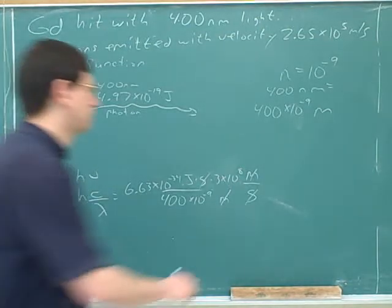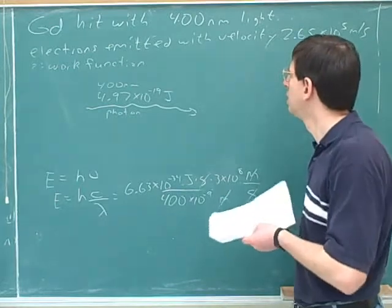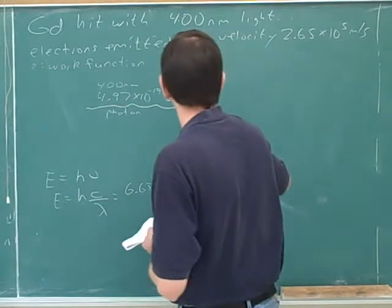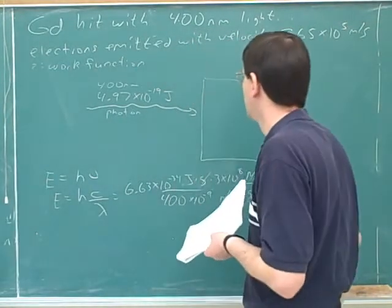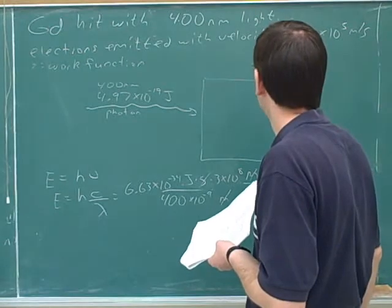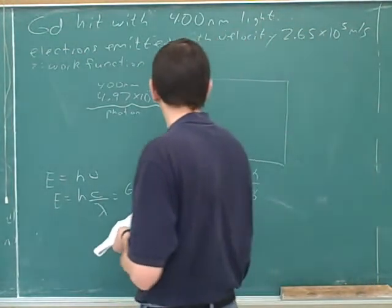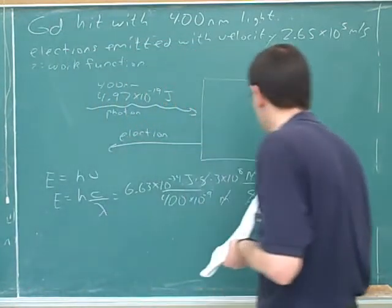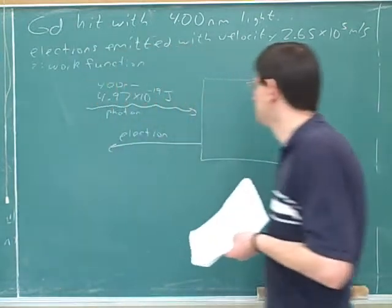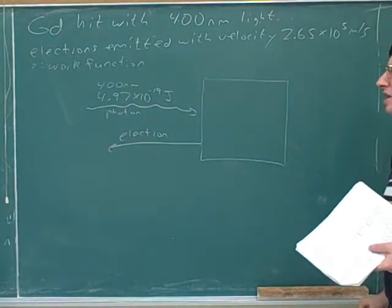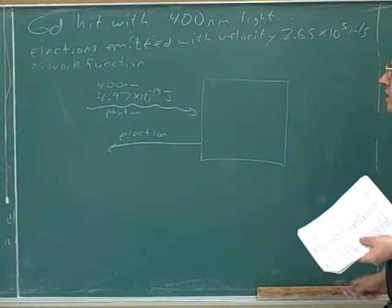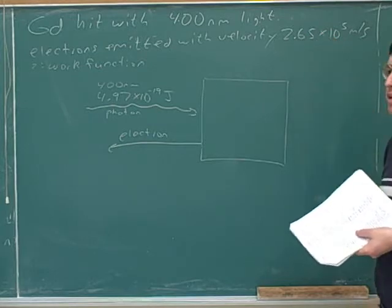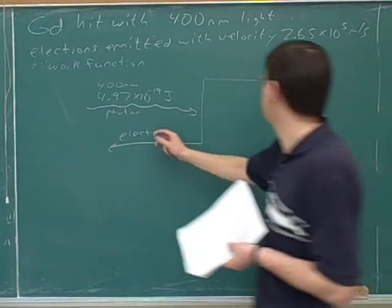So now we can go to 1 half mv squared equals h nu minus work function to solve for the work function. Yeah? Minus h nu? No. It's the other equation we have. Minus this? Why minus? No, no, no. It's e kinetic of the electron, which is 1 half mv squared. Yeah. That sounds good. Let's try to get a little more intuition though for what we're doing. OK. The electrons are emitted with this velocity. So how would we figure out how much energy they're emitted with? How can we figure out the energy of these electrons?